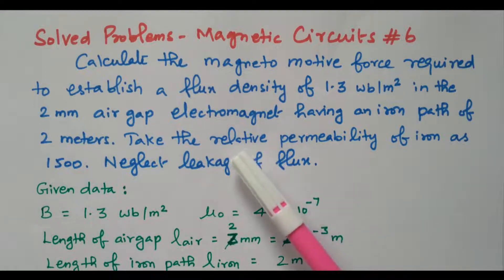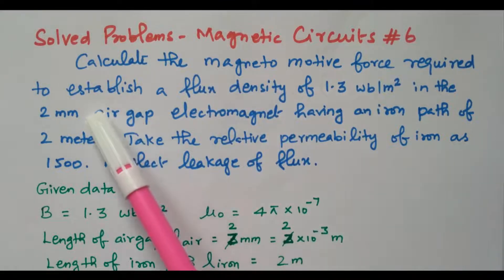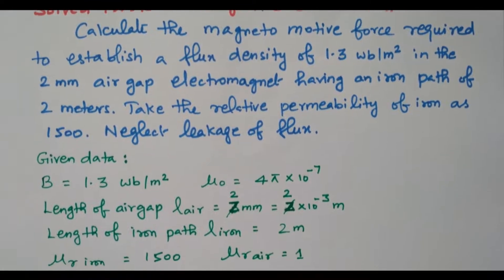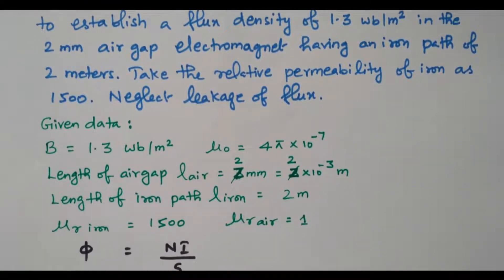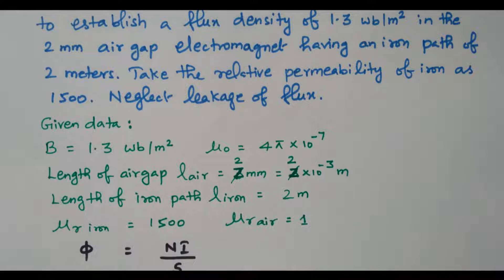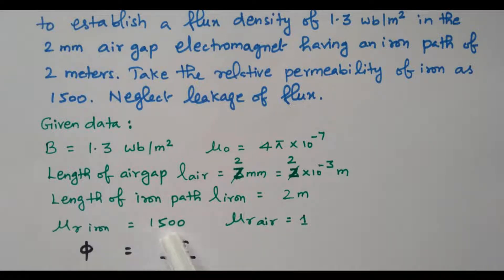We need to find the magnetomotive force, with the air gap and iron path also available. The given data: magnetic flux density is 1.3 Weber per meter square. Mu naught is constant at 4π × 10⁻⁷. The length of the air gap is 2 millimeter, so 2 × 10⁻³ meter. The length of the iron path is 2 meter. Mu r of iron is 1500.